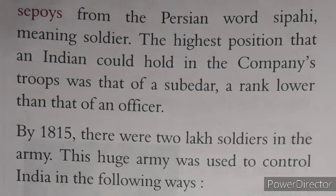The highest position that an Indian could hold in the Company's troops was that of a Subedar, a rank lower than that of an officer. By 1815, there were 2 lakh soldiers in the army. This huge army was used to control India in the following ways: to conquer more territories, to protect British territories from rivals, to protect the trading interests of the company, and to suppress internal revolts against the British.